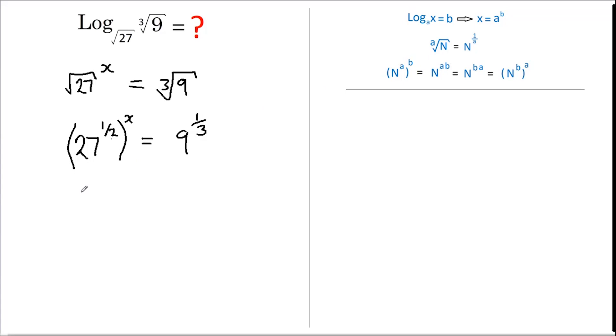So let's rewrite this as 27 to the power of a half times X, and this equals 9 to the power of a third.